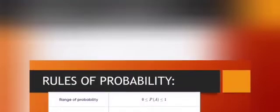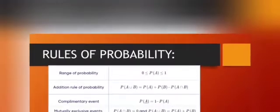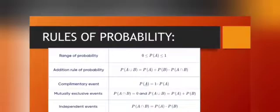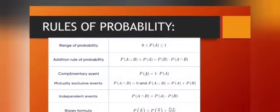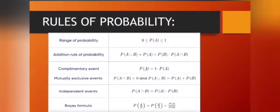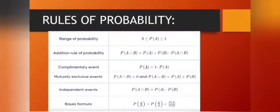Some rules of probability: range of probability from 0 to 1, addition rule of probability, complementary event, mutually exclusive event, independent events, and base formula.